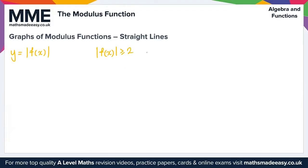The second type is y equals f of the modulus of x, where the modulus is only around x. In this case, negative x values give the same result as the corresponding positive x values. The graph of f(x) for x greater than or equal to zero is reflected in the y-axis for negative x values.